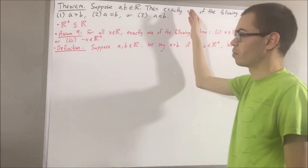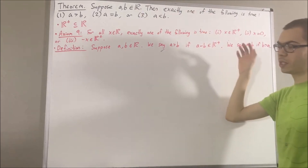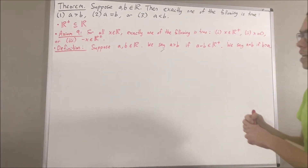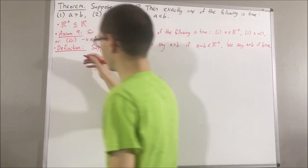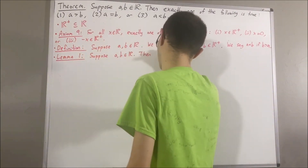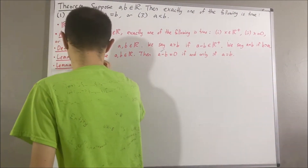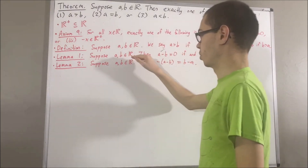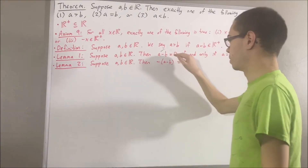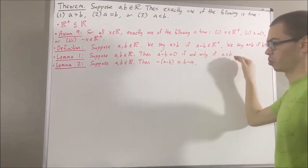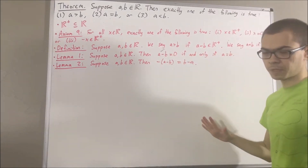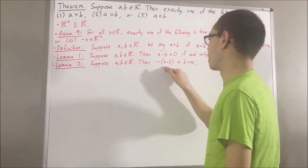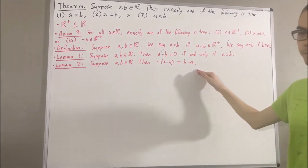In proving this theorem, we are going to be using two preliminary results which we have proven. Suppose a and b are real numbers. Then a minus b is equal to zero if and only if a is equal to b. And also, suppose a and b are real numbers. Then the negative of a minus b is equal to b minus a.